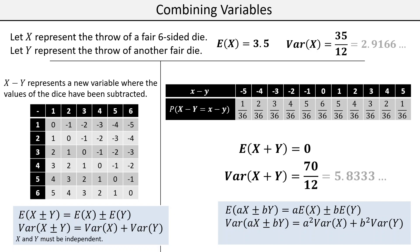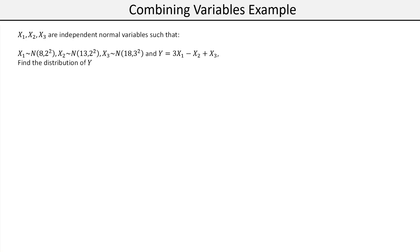Let's see this in action with an example. We're told that X1, X2, and X3 are independent normal variables: X1 ~ N(8, 2²), X2 has its own normal distribution with mean 13, and X3 has its own with mean 18. Y is defined as the combination Y = 3X1 − X2 + X3, and we're asked to find the distribution of Y.